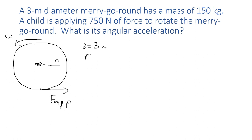But for our purposes we need radius, so we do half of that. We know the radius, we know the mass of the merry-go-round is 150 kilograms, so it's pretty heavy. Force applied is 750 newtons and the angular acceleration is what we need to know in this particular example.